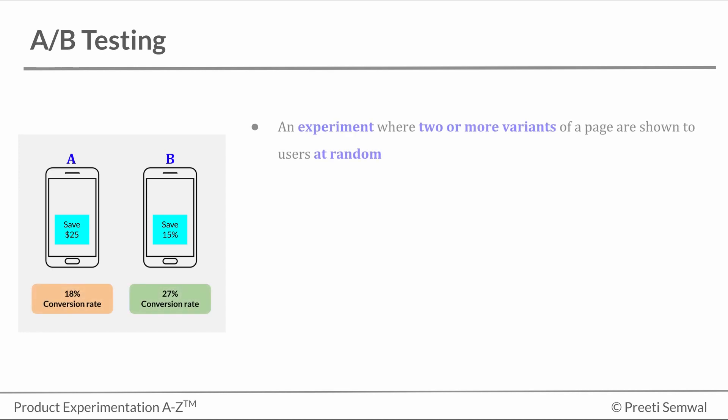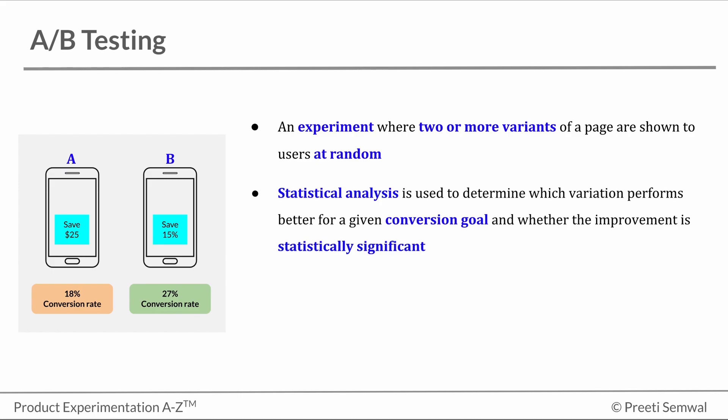It is essentially an experiment where two or more variants of a page are shown to users at random. Statistical analysis is used to determine which variation performs better for a given conversion goal and whether the improvement is statistically significant.